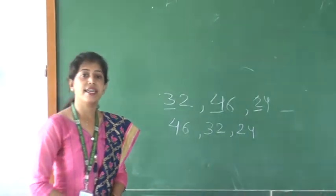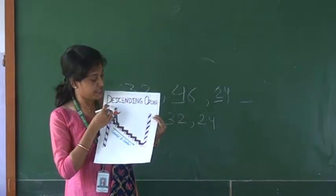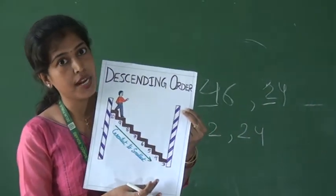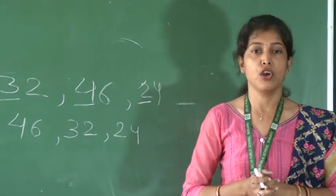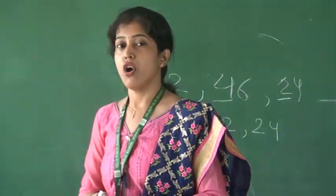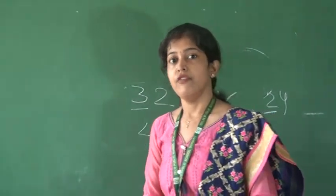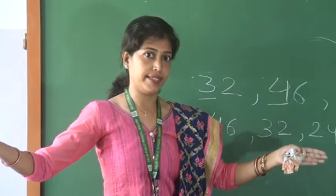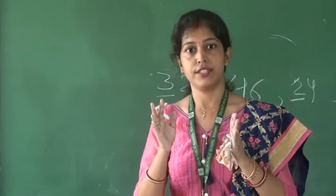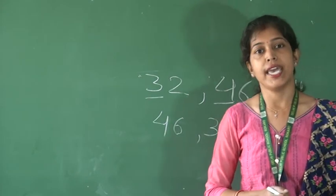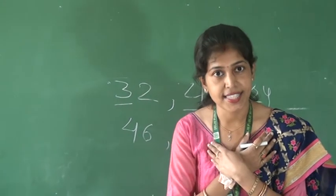So in this way we arrange the numbers in descending order from biggest to smallest. In the chart, the boy is moving downwards from the biggest number to the smallest number — same way in descending order. Hope students you all have understood the concept of ascending and descending order. In ascending order we arrange from smallest to biggest, and in descending order we arrange from biggest to smallest. Do the exercises nicely in your copy, listen to your parents, stay home and stay safe. Thank you.